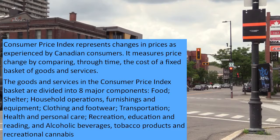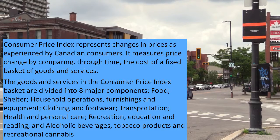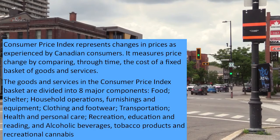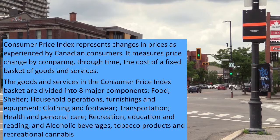The goods and services in the Consumer Price Index basket are divided into eight major components which are: food, shelter, household operations, furnishing and equipment, clothing and footwear, transportation, health and personal care, recreation, education and reading, alcoholic beverages, tobacco products and recreational cannabis.